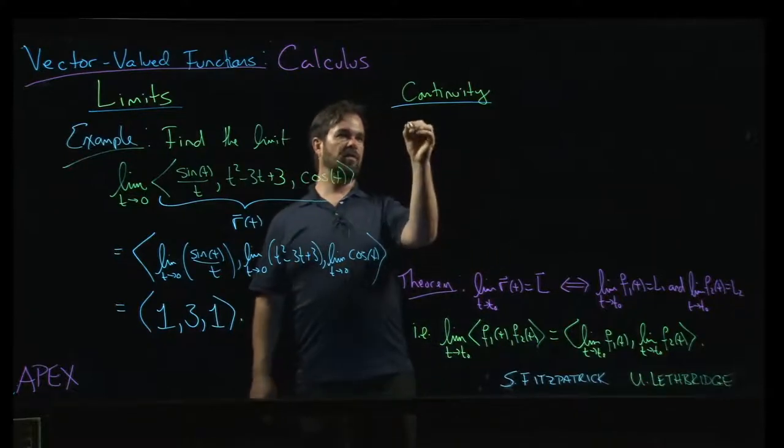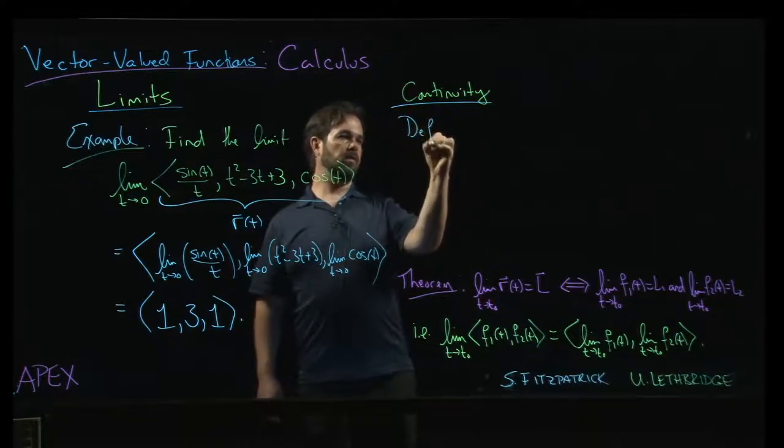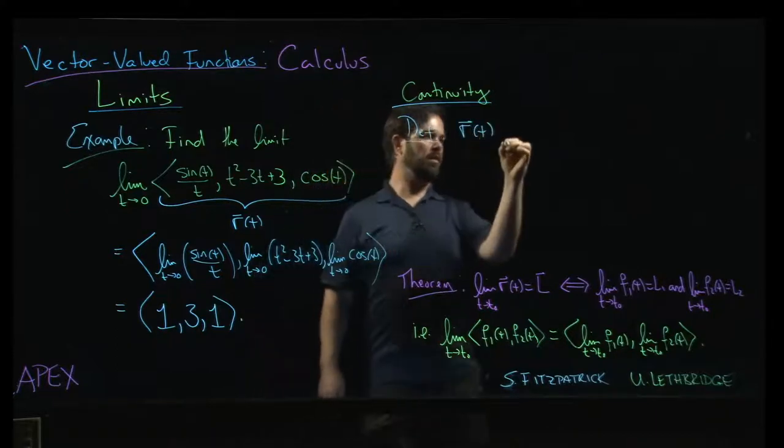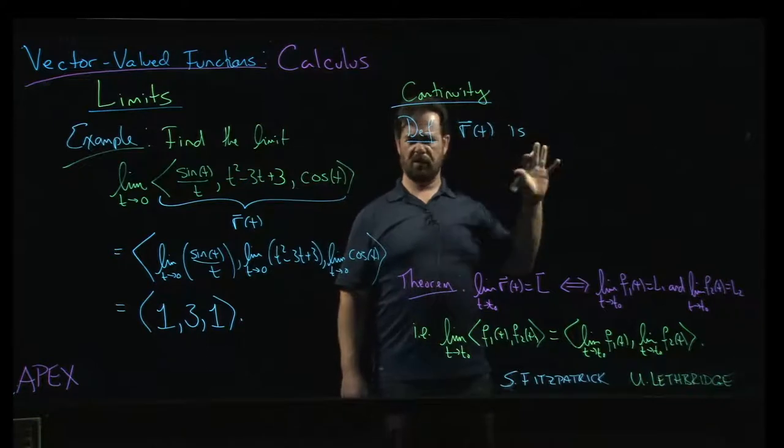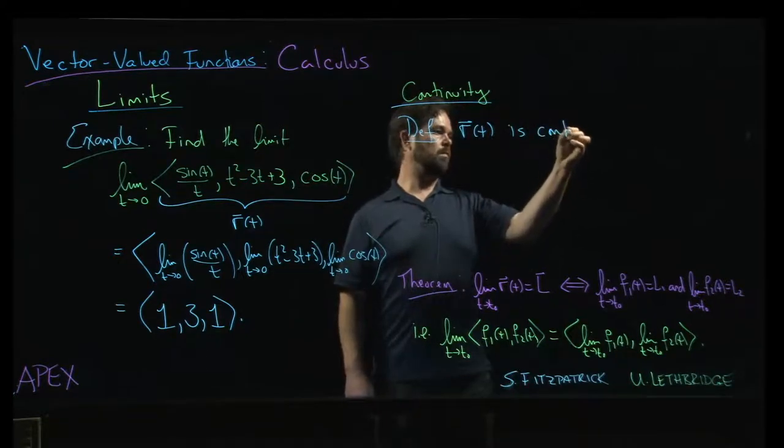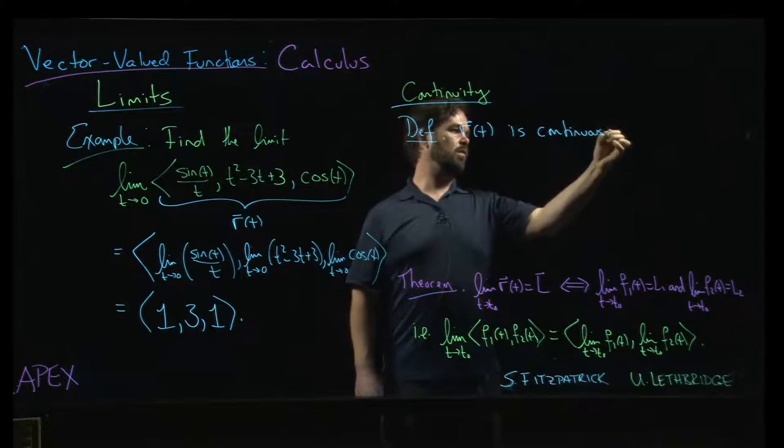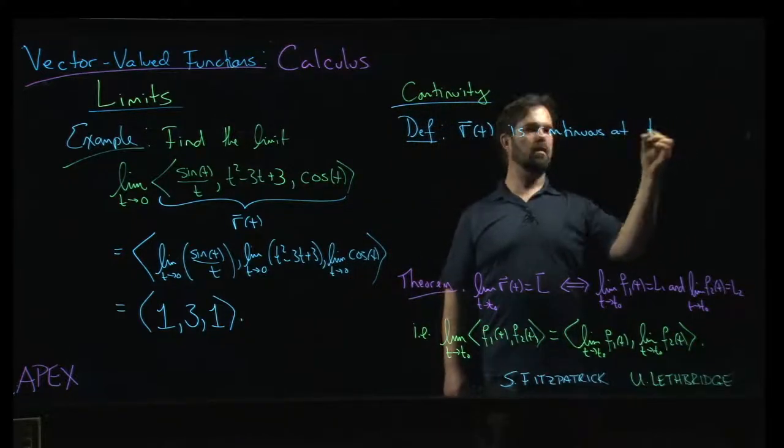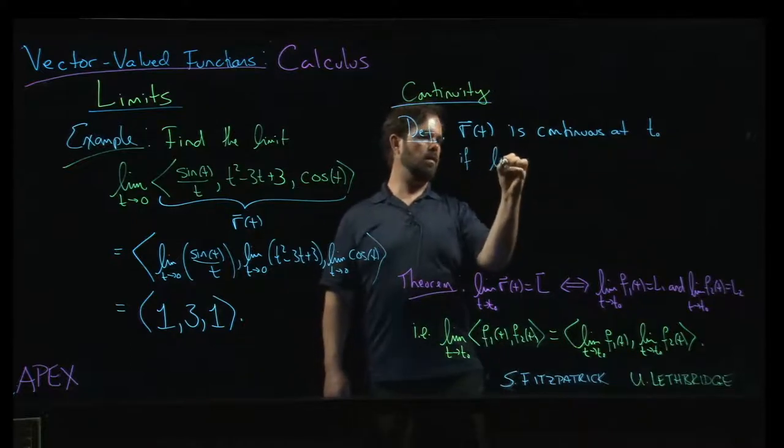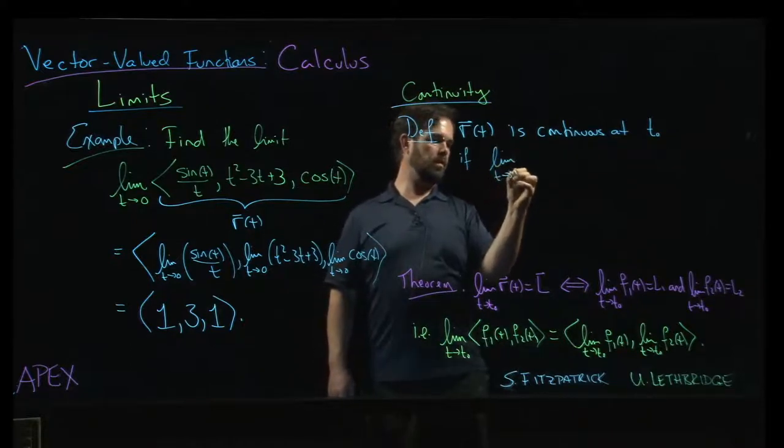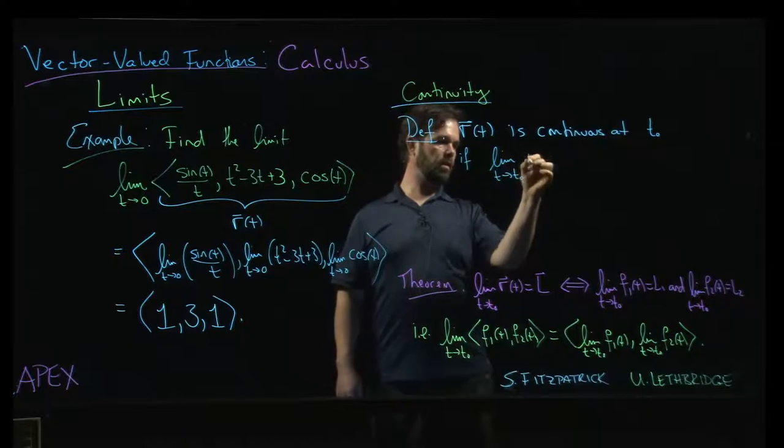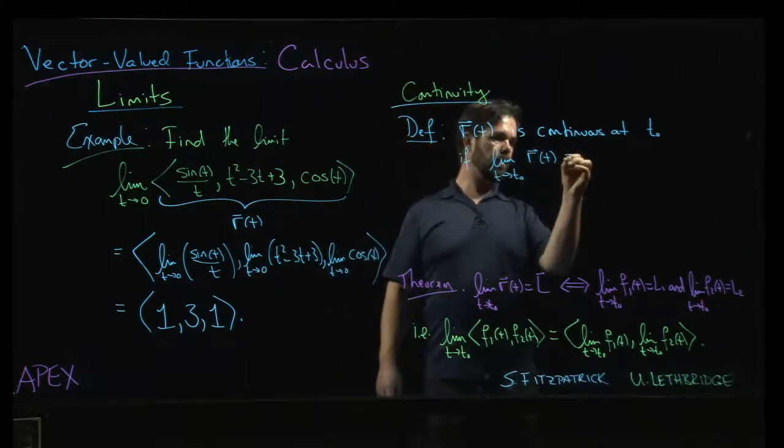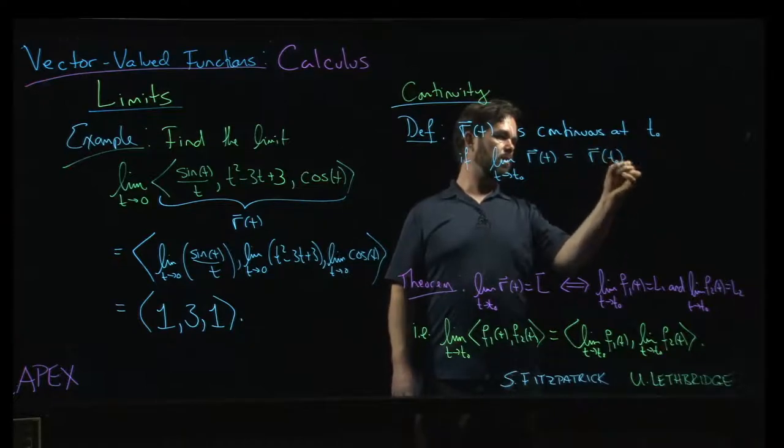And the definition is sort of exactly what you might expect. So r, again, it's a vector-valued function, is continuous at some point, say t0, if the limit as t goes to t0 of r is equal to r.